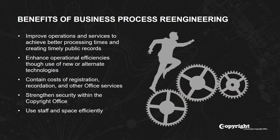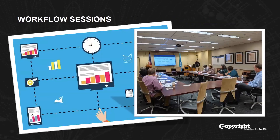Additional objectives include enhancing operational efficiencies through use of new or alternate technologies, containing costs of registration, recordation, and other copyright office services, strengthening security within the copyright office, and using staff and space efficiently. BPR began in July and is anticipated to conclude in June of 2020. The copyright office offers many services and is comprised of multiple business units, which focus on specific aspects of these services. BPR is occurring across eight selected business units, and we are concentrating on 66 processes across these units.